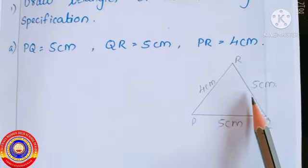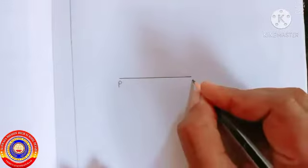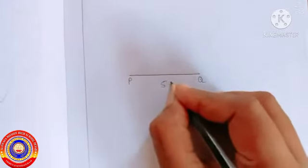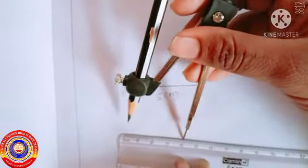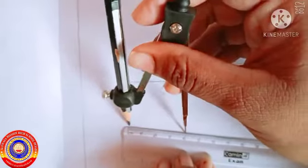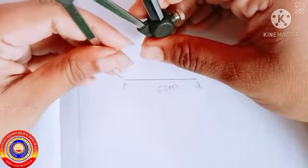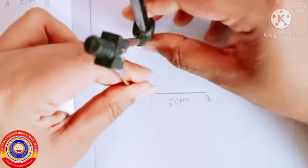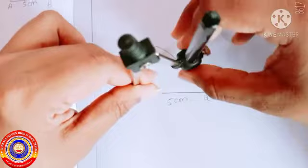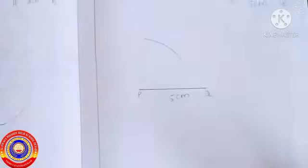Draw a line PQ 5 centimeters long. Then using a compass and ruler, measure 4 centimeters, place the compass at point P, and draw an arc with a 4 centimeter radius.